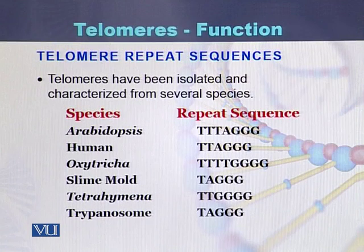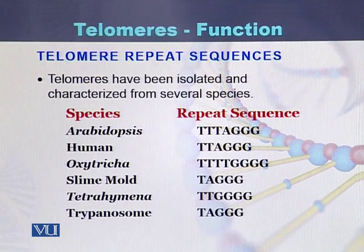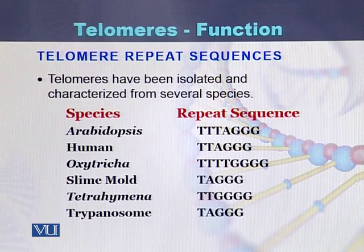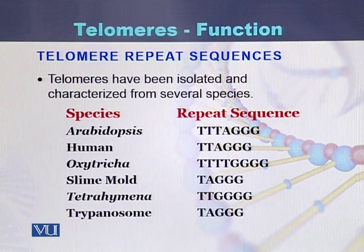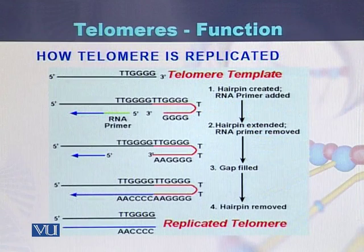Telomere repeat sequences have been isolated and characterized from several species. Here we can see the repeat sequences of different species. In Arabidopsis thaliana, the repeat sequence is triple-T, A, and triple-G. In humans, the repeat sequence is double-T, A, and triple-G. In Oxytricha, the sequence is double-T, double-G, and double-G.